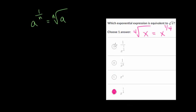And again, if you want to double check this, just go through a, b, and c and prove to yourself that they're not equal to the fourth root of x.